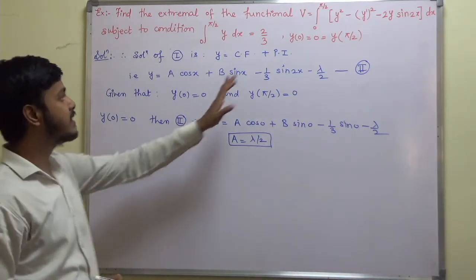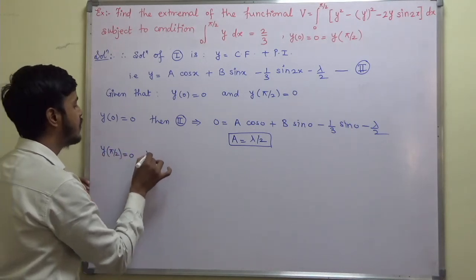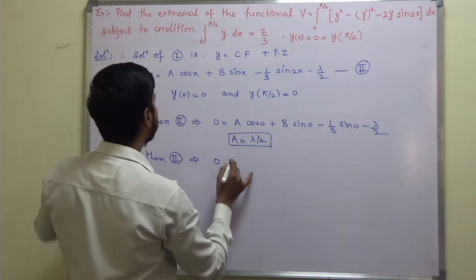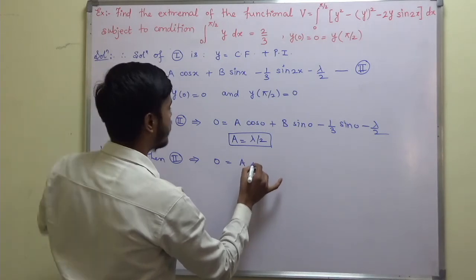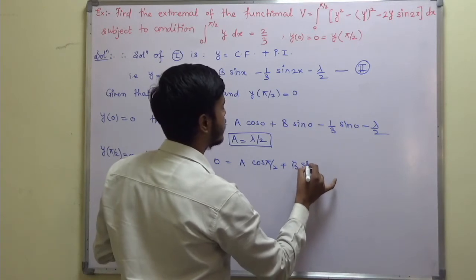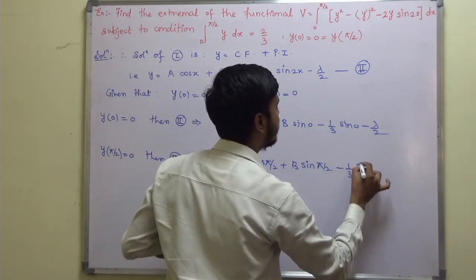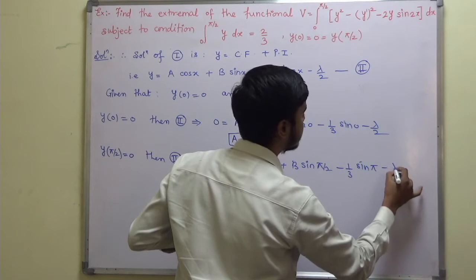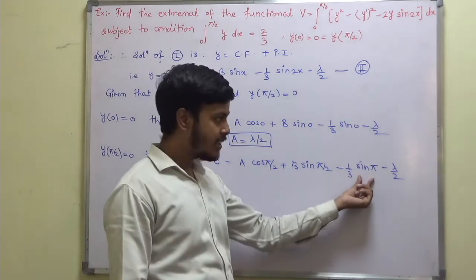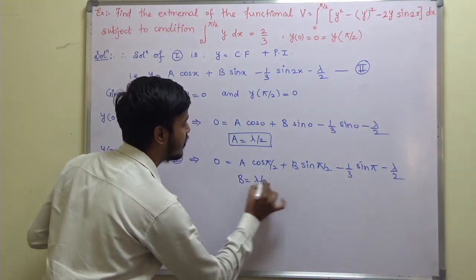Now applying the second condition y(π/2) = 0 to equation 2: 0 = a·cos(π/2) + b·sin(π/2) − (1/3)sin(π) − λ/2. Since cos(π/2) = 0, sin(π/2) = 1, and sin(π) = 0, we get b = λ/2.